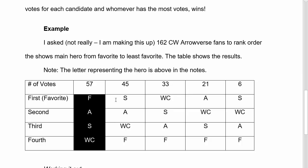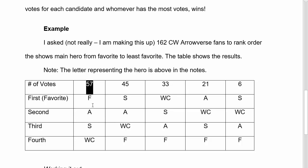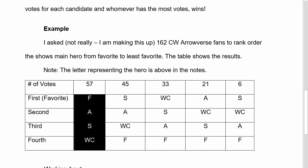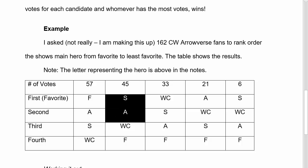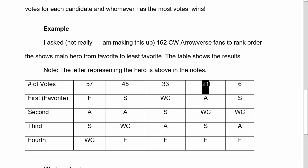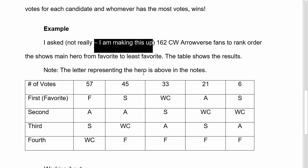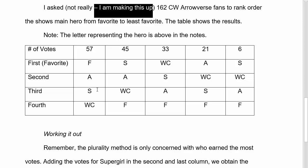57 fans voted in the order of Flash, Arrow, Supergirl, and White Canary. 45 fans voted Supergirl, Arrow, White Canary, and Flash. Then 33 fans this way, 21 fans this way, and 6 fans this way. So you can see there's a little bit of diversity. Now, this is made up — I'm making this up to illustrate something. This is probably not how fans would actually rank order these, but this is what we're going to use for our example.